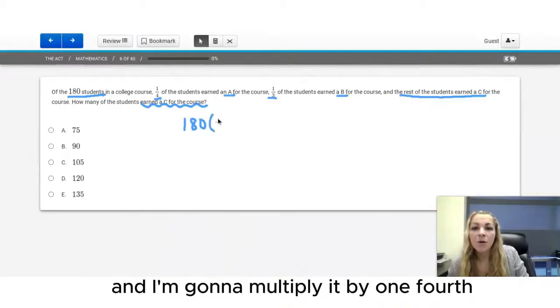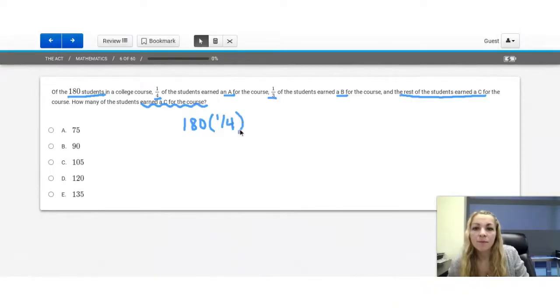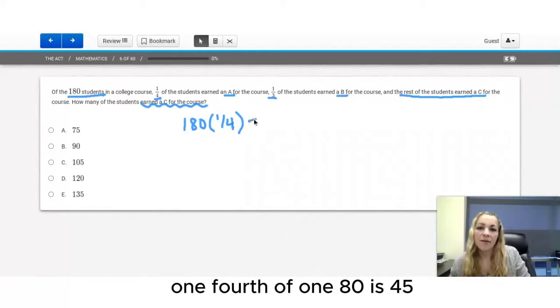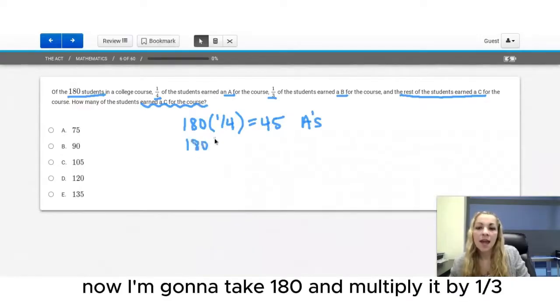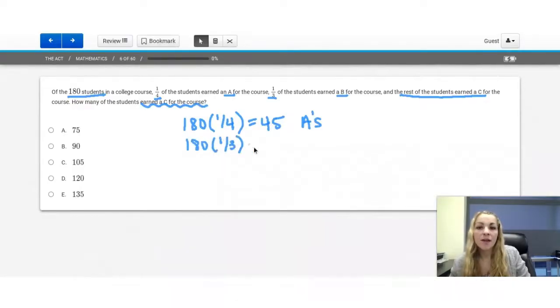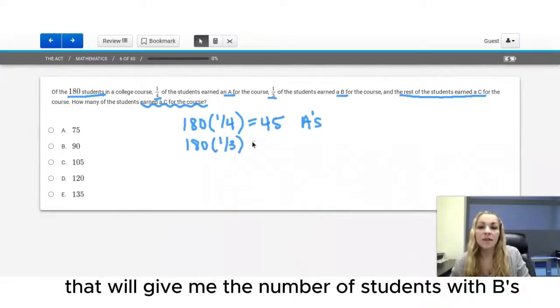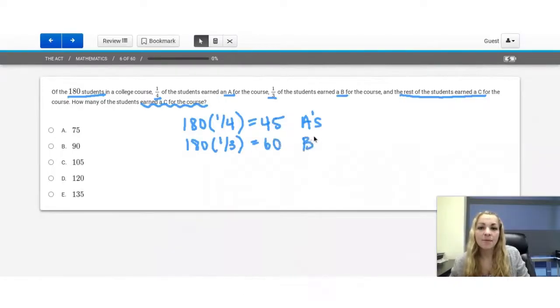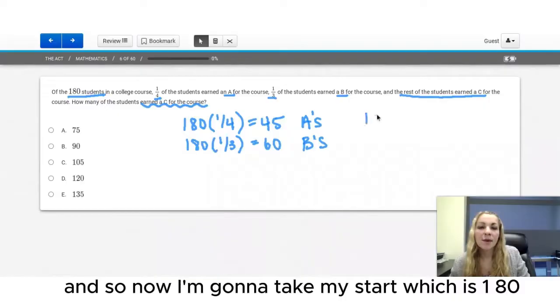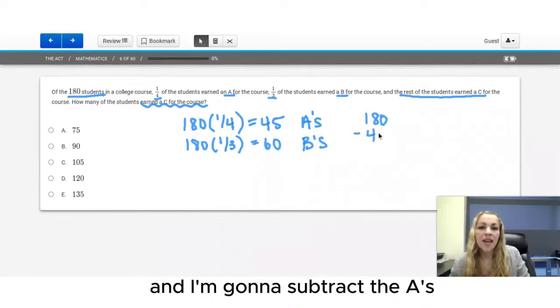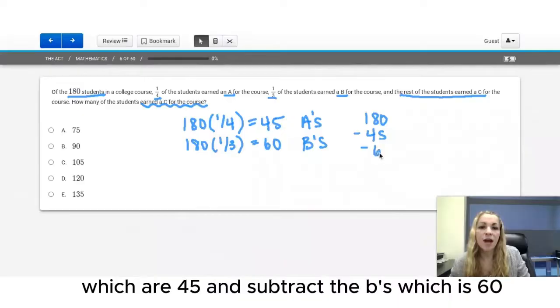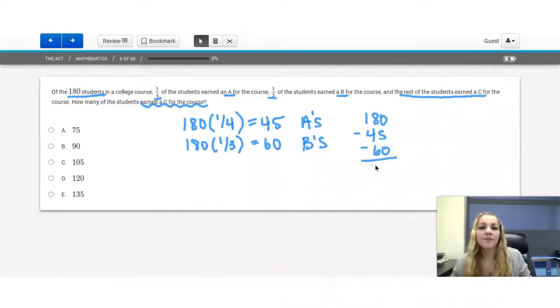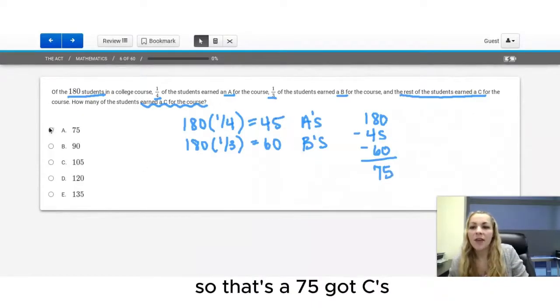So we need to figure out how many of these students got A's. So I'm going to take my starting value, 180, and I'm going to multiply it by one-fourth. One-fourth of 180 is 45. Those are my A's. Now I'm going to take 180 and multiply it by a third. That will give me the number of students with B's. That's 60. So now I'm going to take my start, which is 180, and I'm going to subtract the A's, which are 45, and subtract the B's, which is 60, and that's 75. So that's A, 75 got C's.